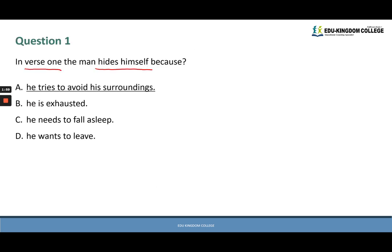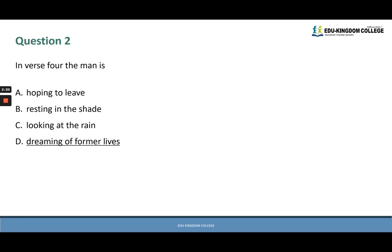Going back to the list of answer options, the answer that best matches what we found in the text is A: he tries to avoid his surroundings. So for question one the answer is A. Question two asks: in verse four the man is — and the options are A: hoping to leave, B: resting in the shade, C: looking at the rain, or D: dreaming of former lives.